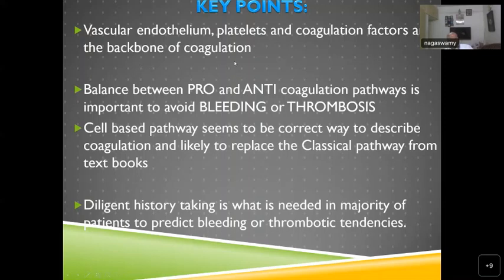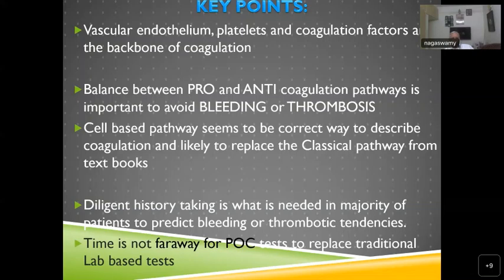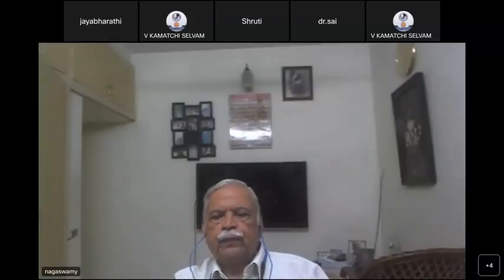To summarize: vascular endothelium, platelets, and coagulation factors are the backbone of coagulation. Balance between pro- and anti-coagulation pathways is essential for avoiding both bleeding and thrombosis. The cell-based pathway is the correct way to describe coagulation and should replace the classical pathway in textbooks. Diligent history taking is sufficient for the majority of patients. Point-of-care testing is increasingly replacing traditional lab-based tests — thromboelastography in particular is now an important tool both intraoperatively and postoperatively, especially in liver transplant cases.